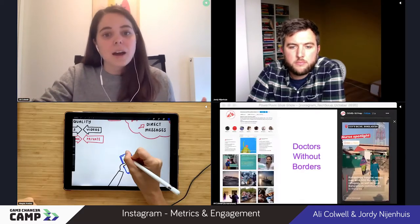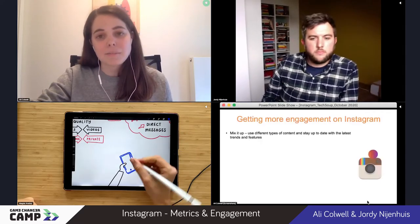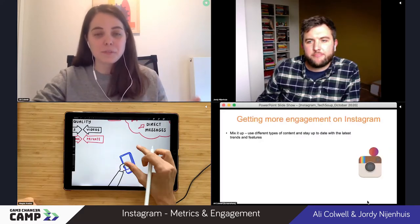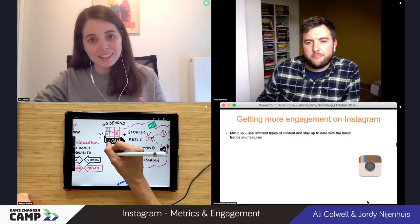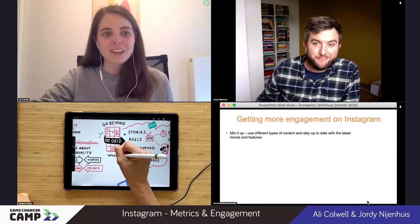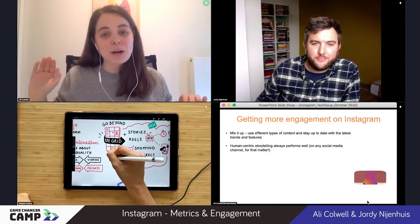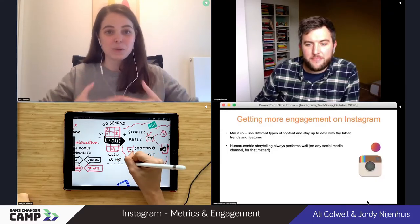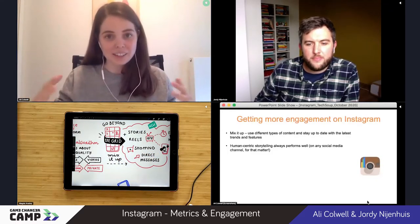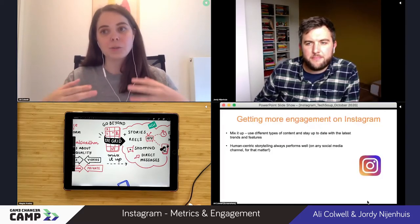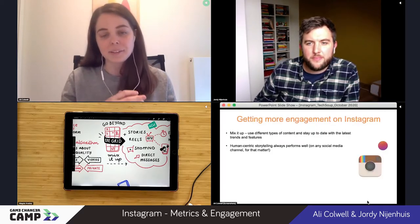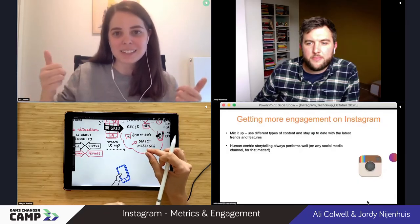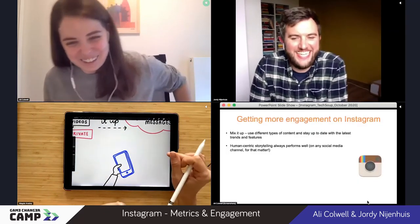Some final thoughts on engagement with Instagram: mix it up. Don't just stick to the grid — use the different tools and features available to you. You can make really professional, cool, engaging content without spending thousands of euros. Human-centric storytelling always performs well, but this goes for any social media channel. We are humans — we relate to stories. Storytelling is how we shape our reality. Always try to tell a story and connect your message back to a story whenever you can, because that's always going to be much more compelling than just posting a group picture saying 'yay, we did it.' Nobody cares about that.